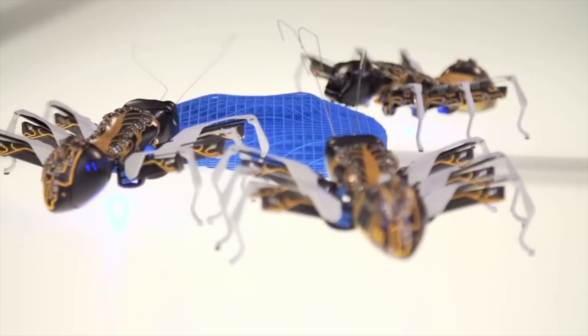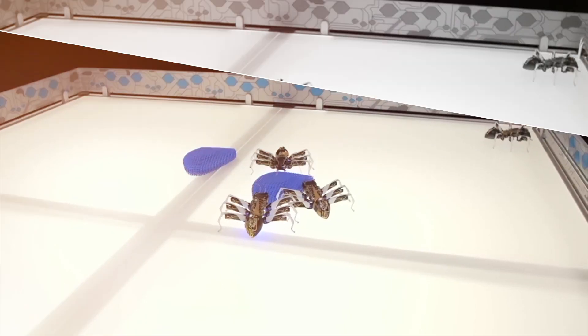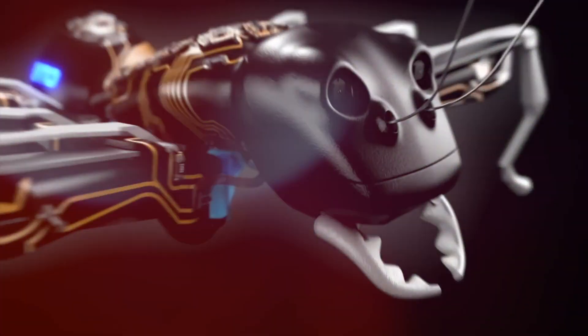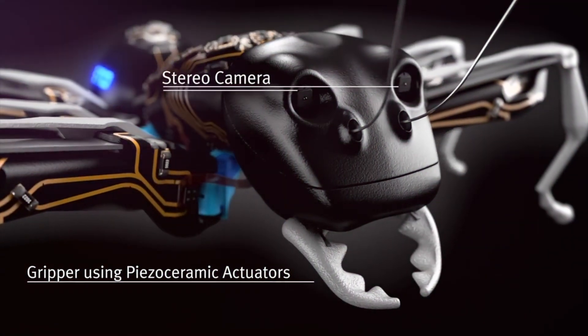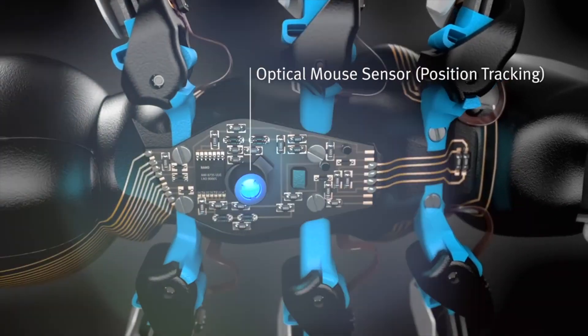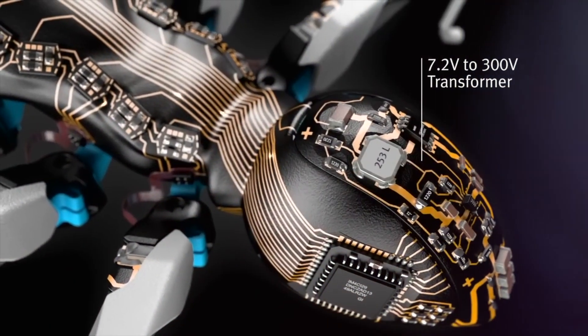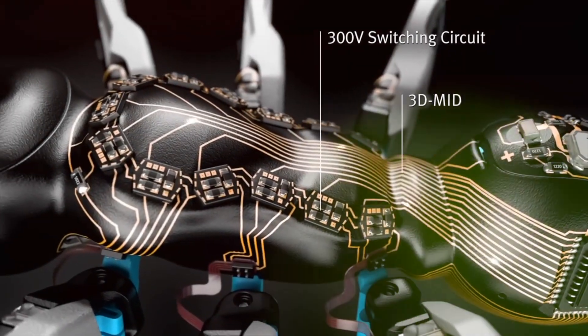Number 1: Bionic Ants. For Bionic Ant, Festo not only took the delicate anatomy of natural ants as a model, but also used complex control algorithms to transfer the cooperative behavior of living things into the world of technology for the first time.